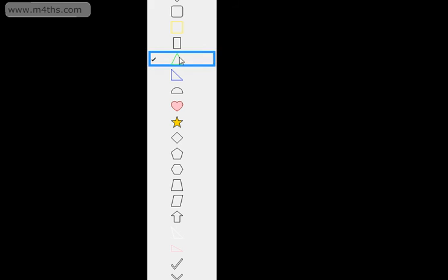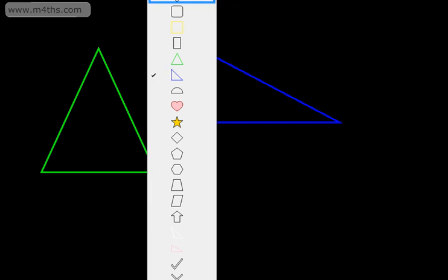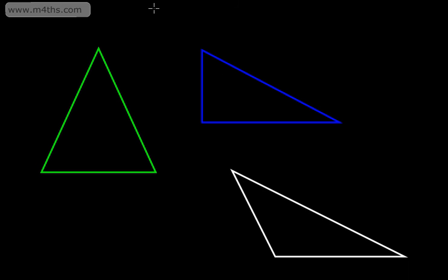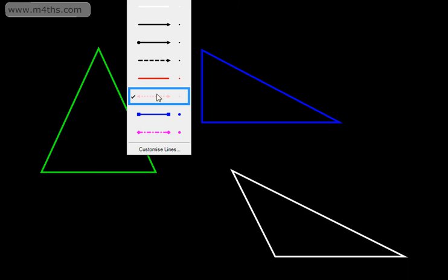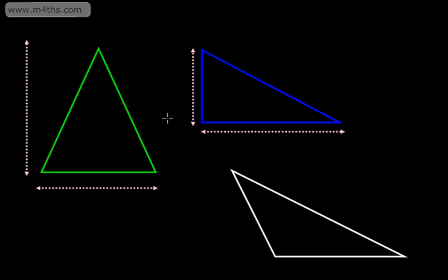I'm going to start off by drawing a few different triangles — an isosceles triangle, a right angle triangle, and a scalene triangle. If I can find a base and a perpendicular height, then I can find the area of each of these triangles. There's a base and there is a perpendicular height, and we can see that these two dimensions are at right angles.